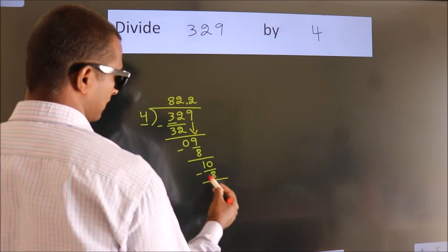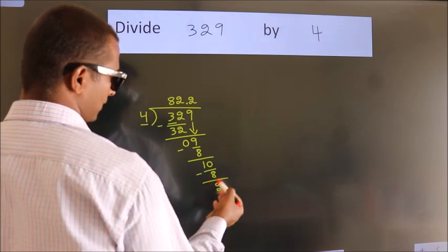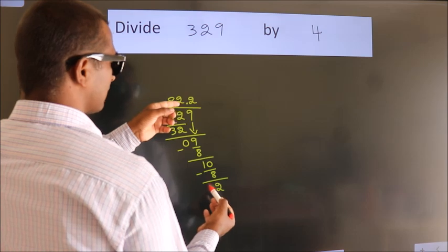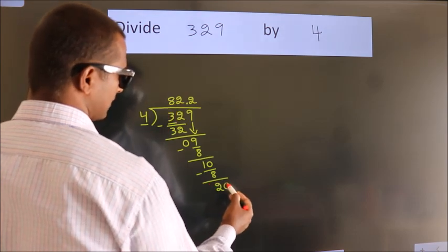Now, we subtract. We get 2. After this, we already have the decimal. So, directly take 0.